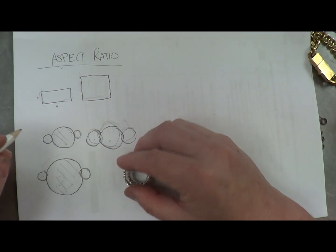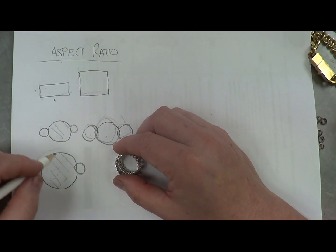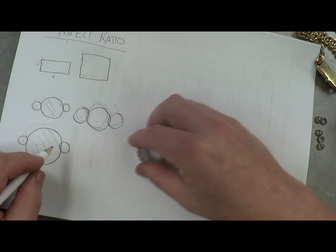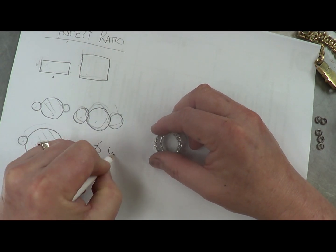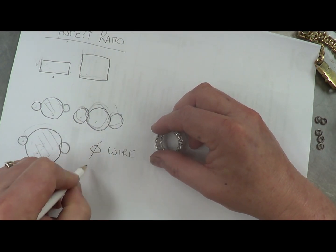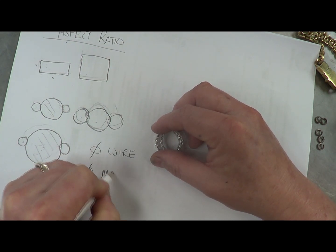So the two determinants for our rings here, for our aspect ratio, whether it's a tight ring or a more open ring, are going to be the diameter of the wire and the diameter of the mandrel.